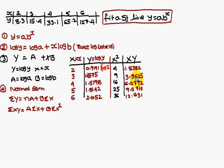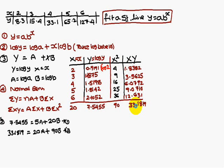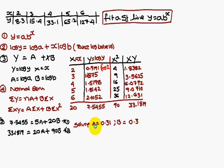The summations are: ΣX = 20, ΣY = 7.545, ΣX² = 90, ΣXY = 33.1819. Substituting into the normal equations gives: 7.545 = 5A + 20B (since n = 5 and ΣX = 20), and 33.1819 = 20A + 90B. We solve these two equations using a calculator.